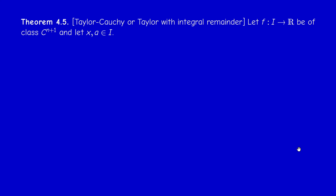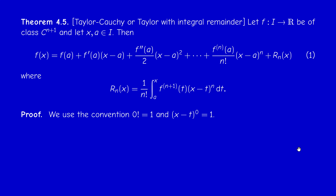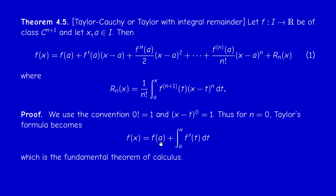Now let us prove Taylor-Cauchy. It follows easily by induction. For n = 0, the polynomial is just f(a), and the remainder is ∫_a^x f'(t) dt — which equals f(x) − f(a) by the fundamental theorem of calculus. So the base case holds.